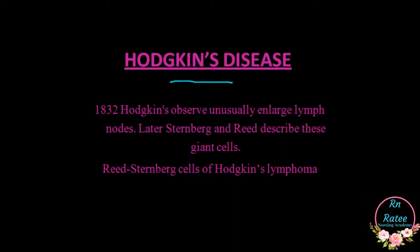In 1832, Hodgkin's scientist observed some lymph nodes, which were analyzed. The first thing noticed were Hodgkin's lymph nodes. Then, 60 years later, Sternberg and Reed studied these giant cells. This is why they are called Reed-Sternberg cells of Hodgkin's lymphoma. But now, this disease is named Hodgkin's disease.